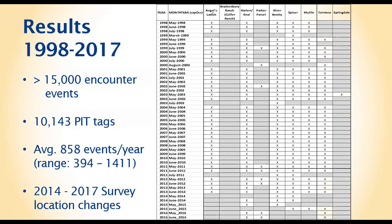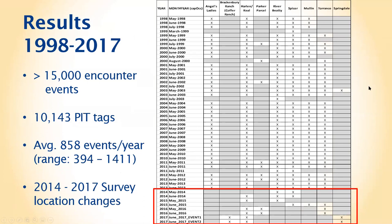By about 2013, since the toad was no longer warranted for listing, more private landowners let surveyors onto their properties — which was great but also meant surveyors couldn't cover every single property in the valley. Over the years, over 15,000 encounter events were recorded, with over 10,000 tags placed into individual toads. Only individuals over 50 millimeters were tagged, averaging about 850 per year, ranging from 400 to over 1,500 depending on the number of surveyors.